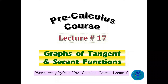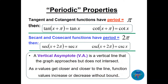Welcome, this is lecture 17 of the pre-calculus course about graphs of tangent and secant functions. The tangent function has a period of pi, which means every pi the graph will repeat itself, and secant has a period of 2 pi, similar to the cosine function. In lecture 17 we will graph tangent and secant; the next lecture, number 18, will cover cotangent and cosecant functions.